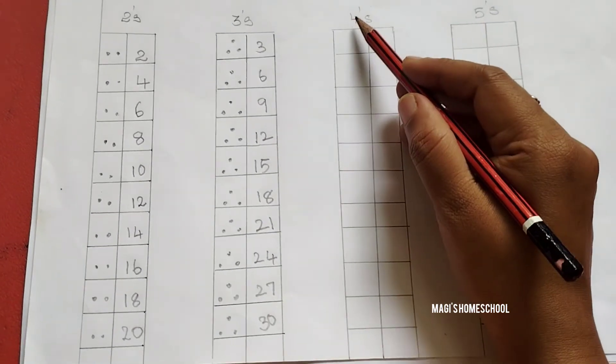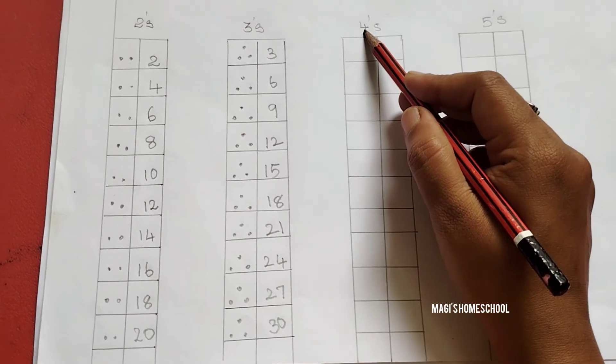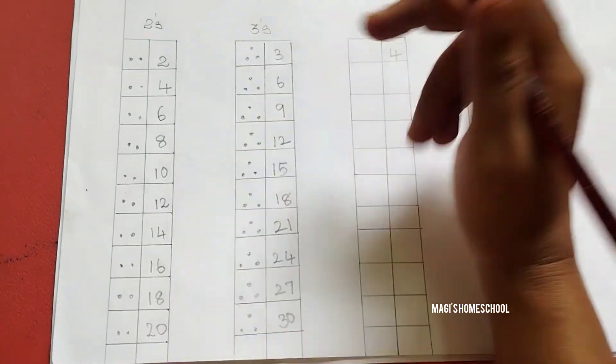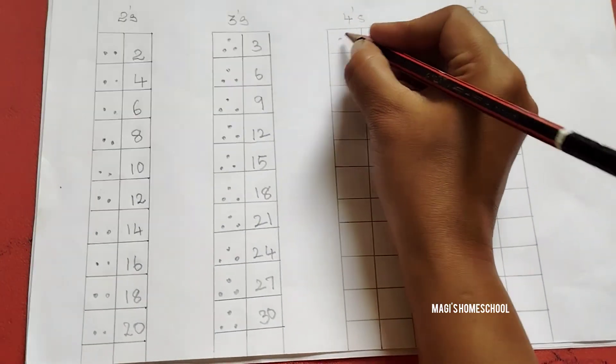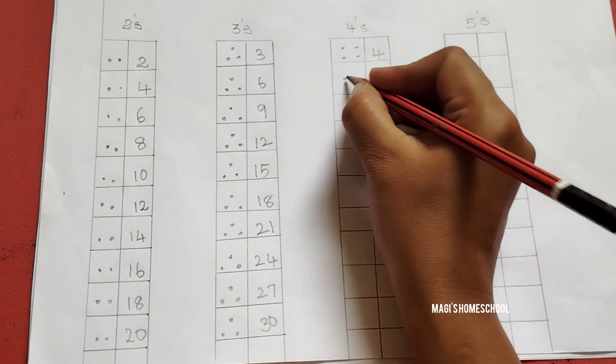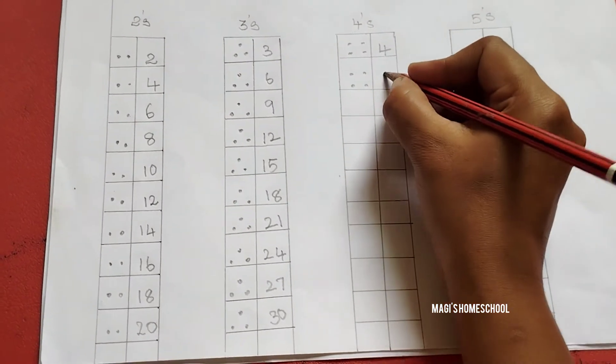Now the skip counting by 4 starts with number 4. For the number 4, you have to add 4 dots and count. 1, 2, 3, 4. We have written 4 already. After 4, 5, 6, 7, 8. Write 8.